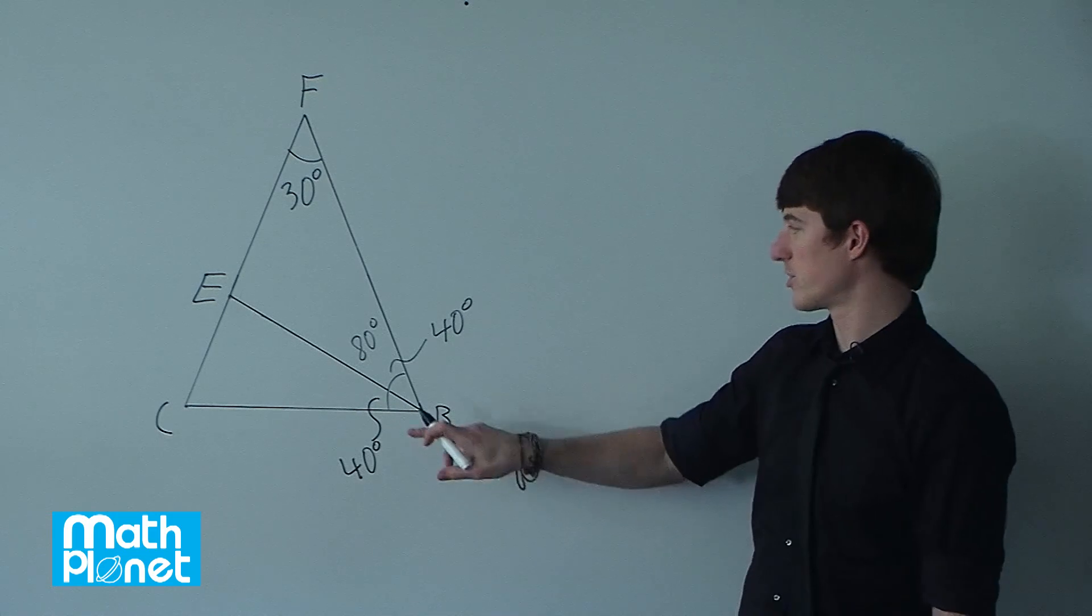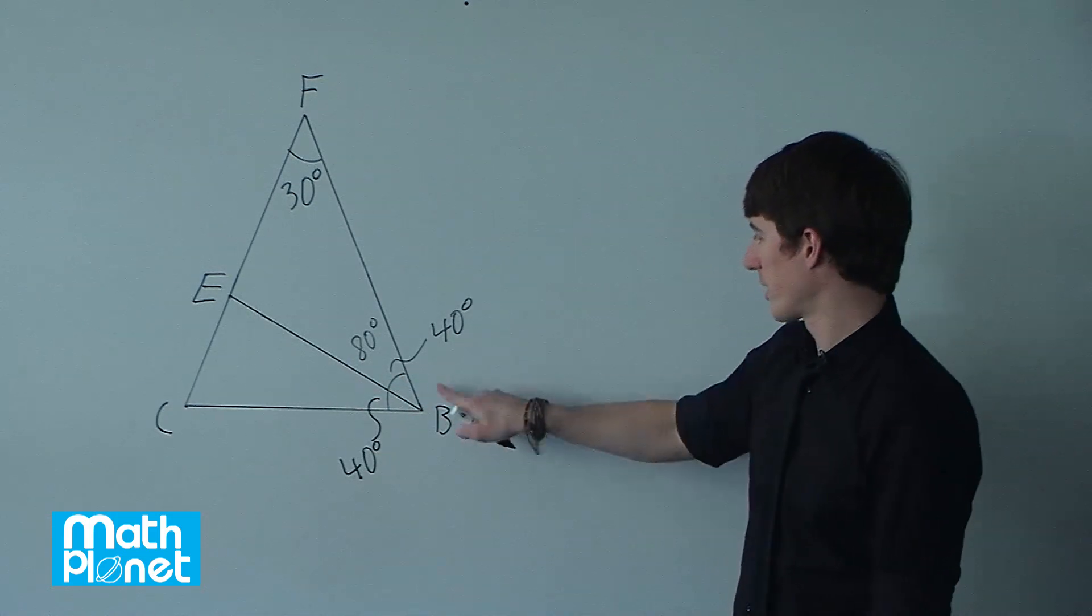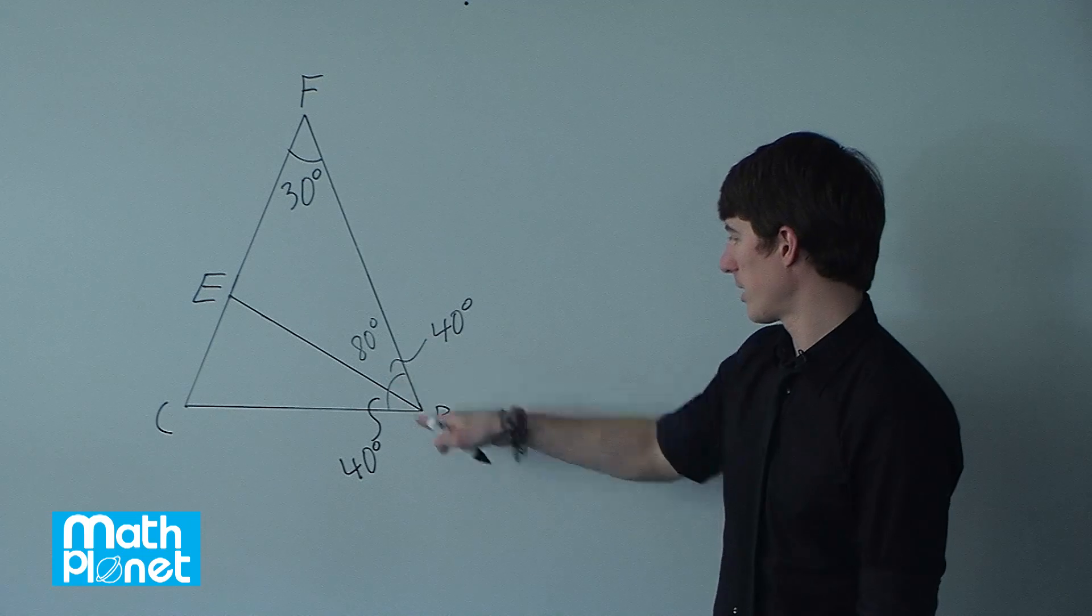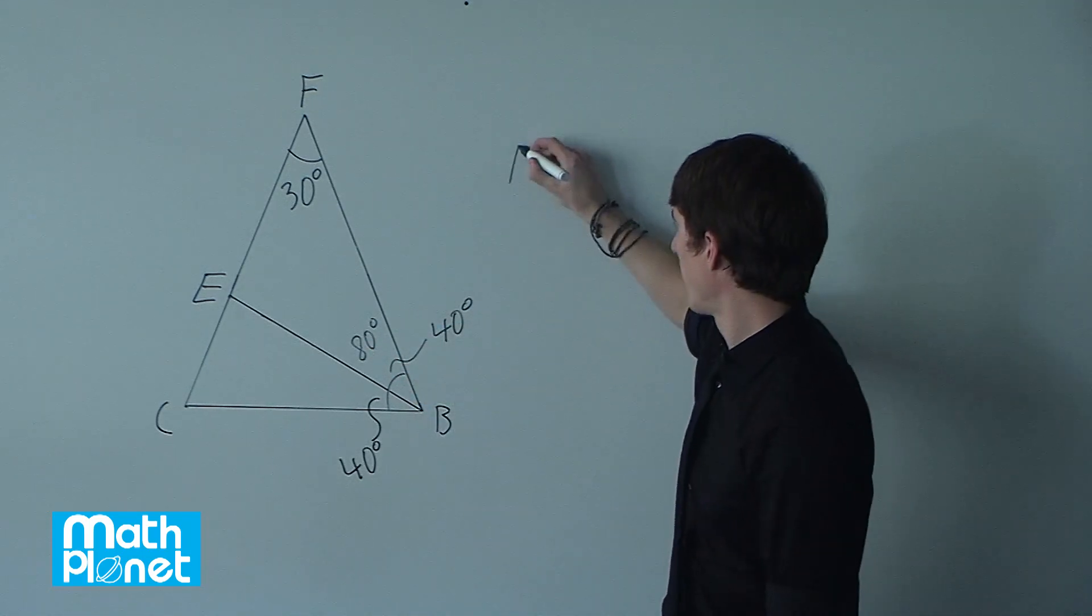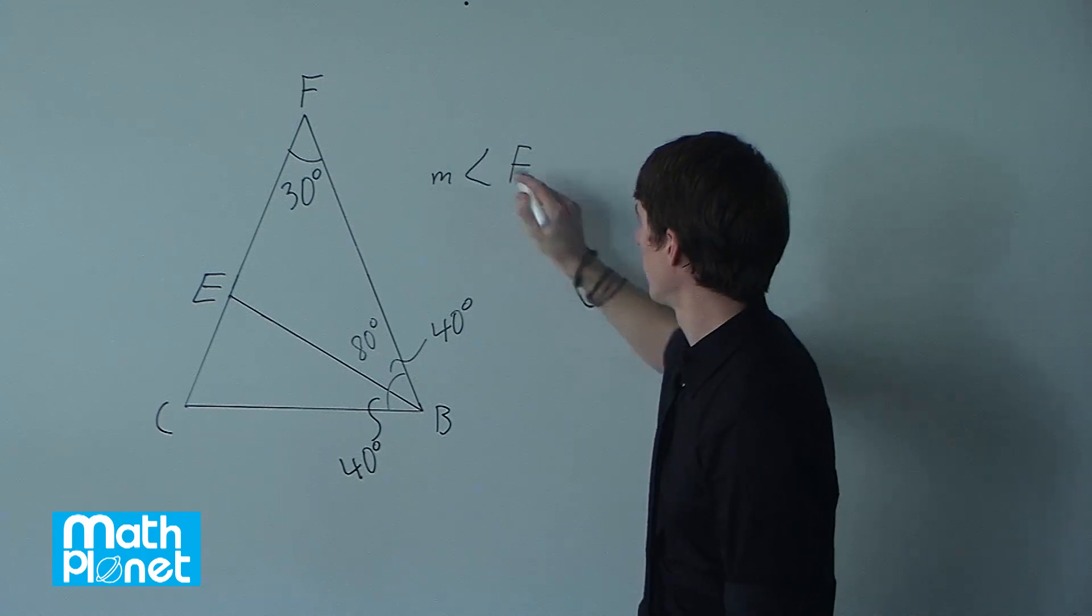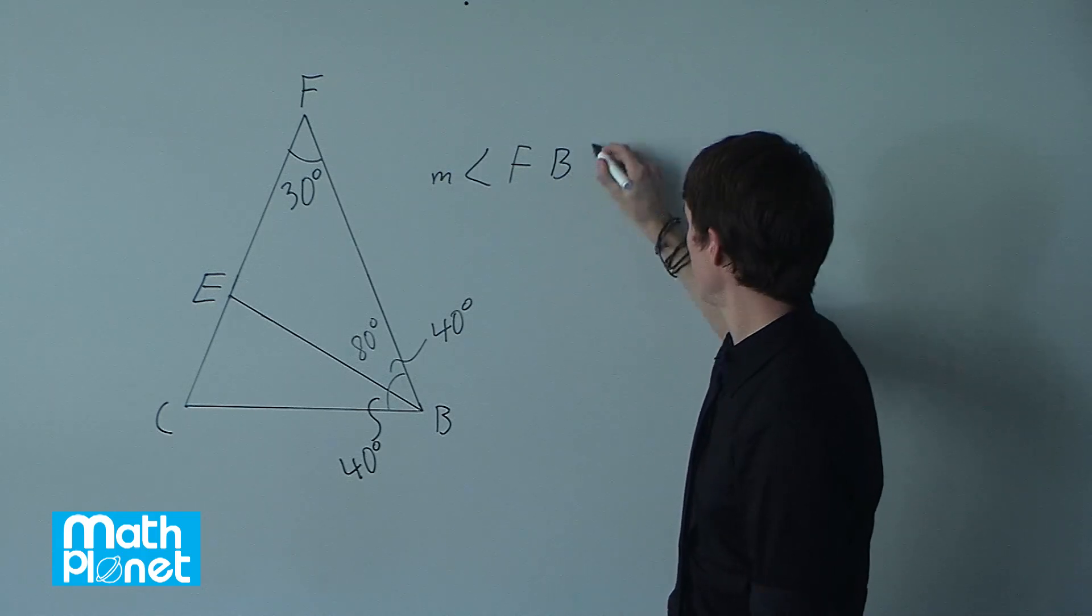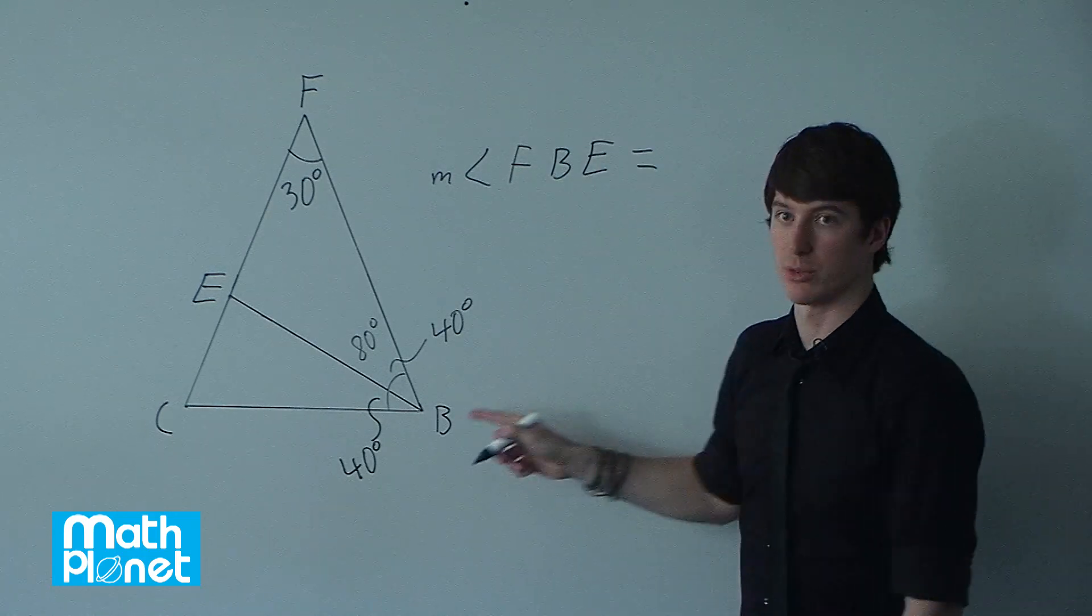Okay, so to find these two angles, well, we're already given one. This one is given immediately. We know that BE bisects this, so this angle F, the measure of angle FBE, is equal to 40 degrees.